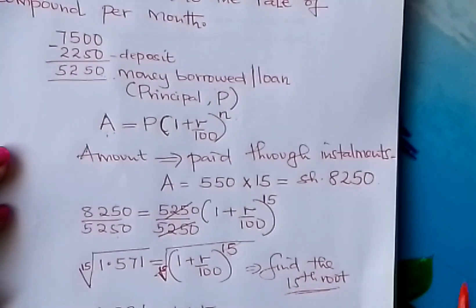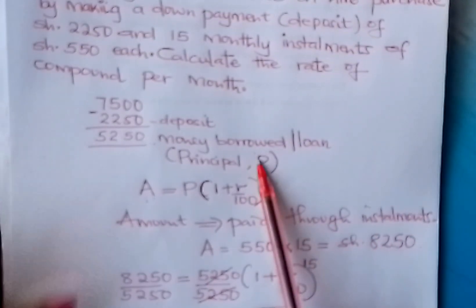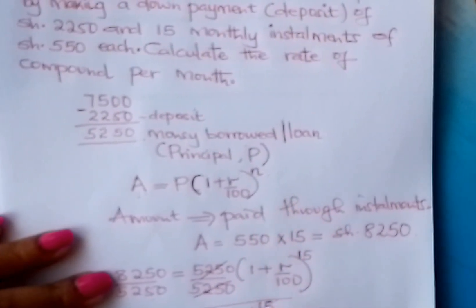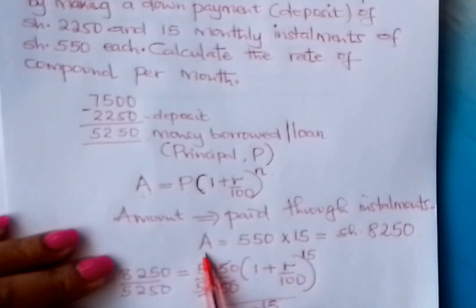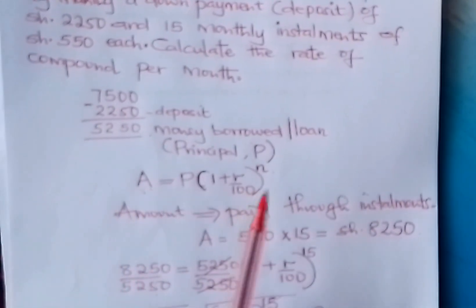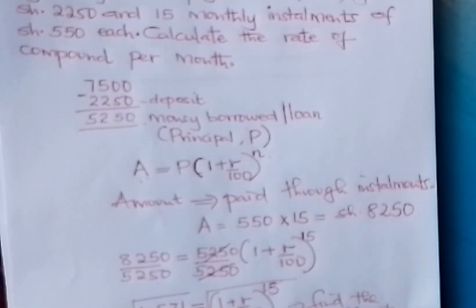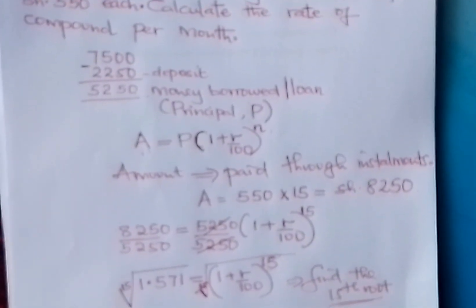So, learner, go through this problem on hire purchase. It is normally tested in exams. Remember: after paying the deposit, what is left is called the principal. This principal will be paid with interest through installments. Therefore, A in this case is the money paid through installments. Then you fix this in the formula. You fix the principal in the formula. Your N is the number of months. Then follow the procedure, learner, up to the end. All the best, learner, as you practice on hire purchase.